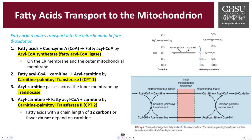Fatty acids are primed with coenzyme A, creating fatty acyl-CoA. The enzyme responsible is acyl-CoA synthetase. The fatty acyl-CoA then combines with carnitine, allowing it to create acyl carnitine.